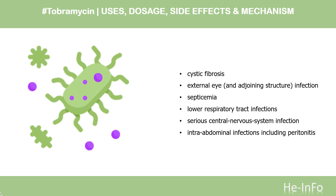Tobramycin injection is also indicated for serious central nervous system infections including meningitis caused by susceptible organisms, and intra-abdominal infections including peritonitis caused by E. coli, Klebsiella spp., and Enterobacter spp.